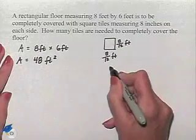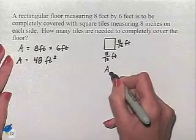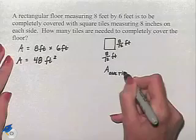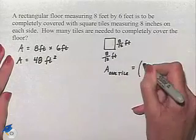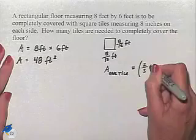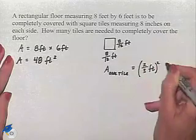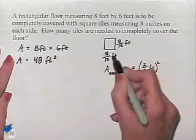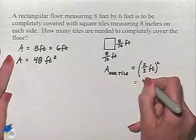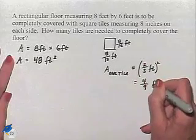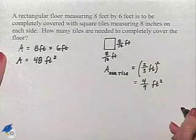So the area of one tile is going to be found by multiplying, and I'm going to go ahead and reduce. We have 2 thirds of a foot squared, since we're multiplying the length times the width. We're going to come up with 4 ninths square feet for the area of one tile.